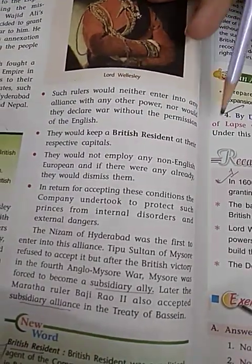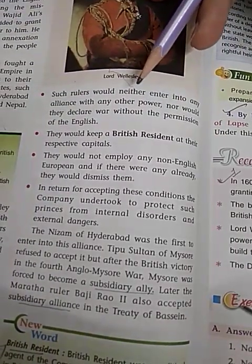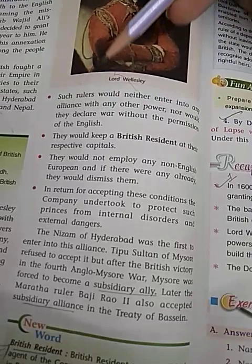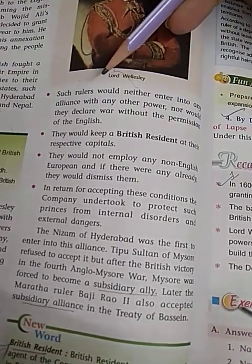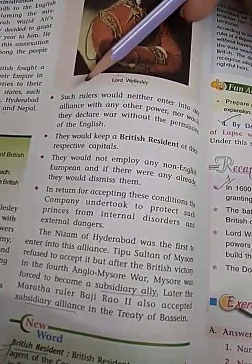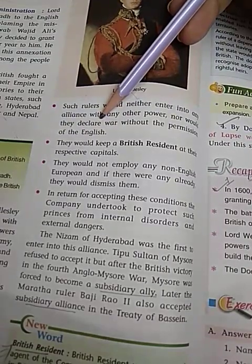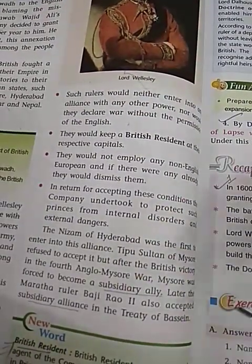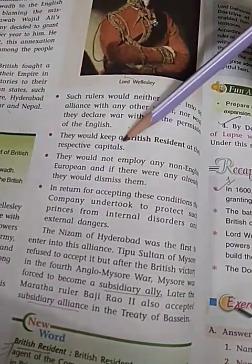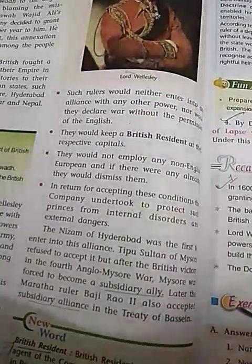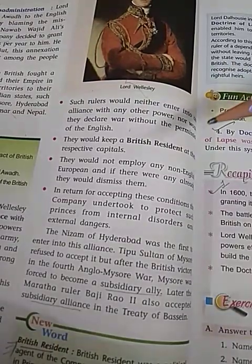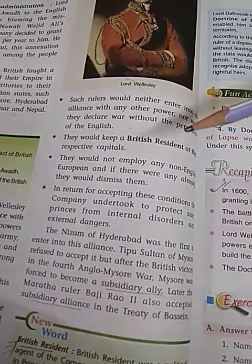Second, such rulers would neither enter into any alliance with any other power nor declare war without the permission of the English. Third, they would keep a British resident — a political agent of the company — at their respective capitals.